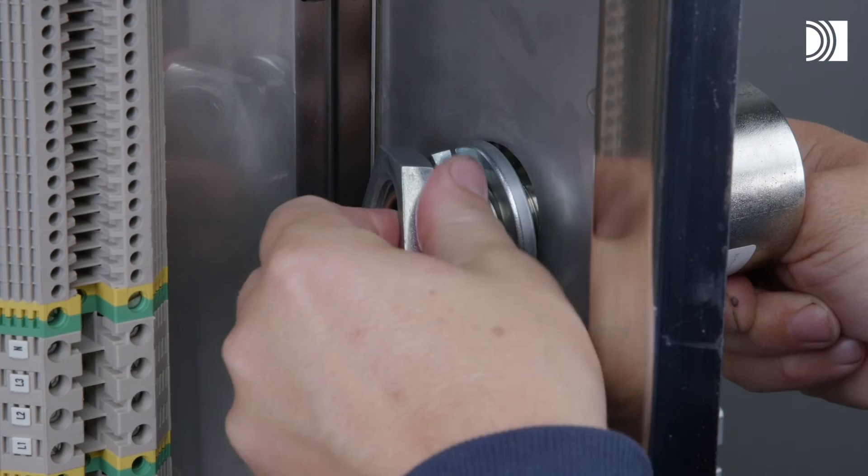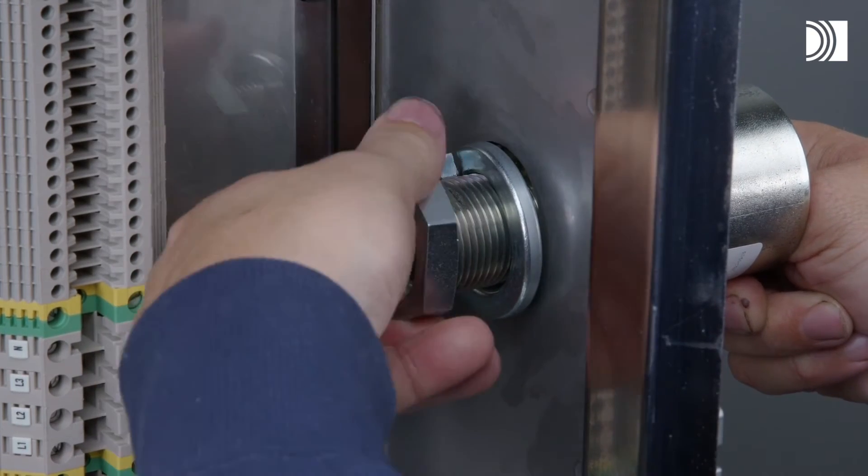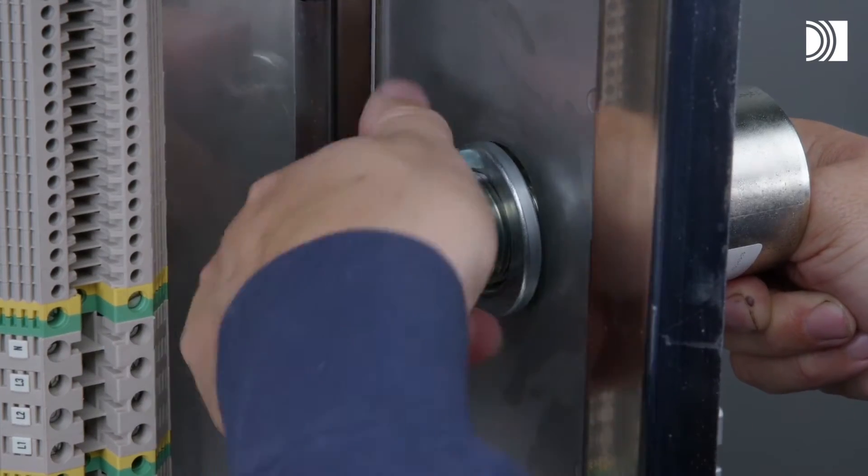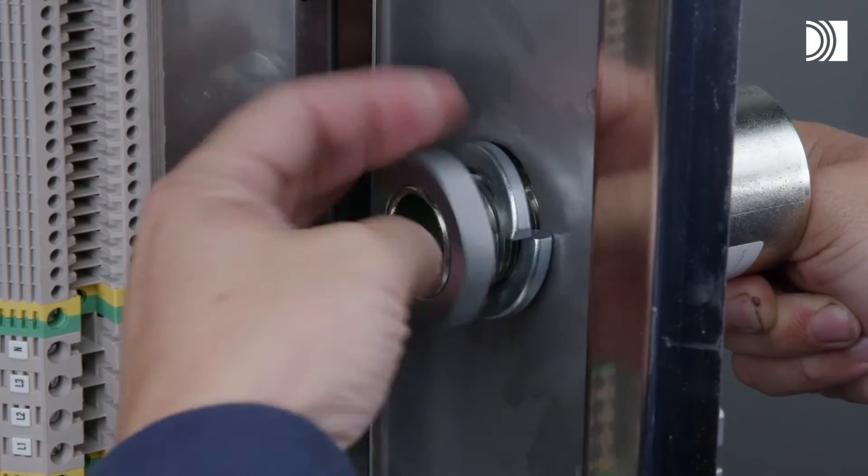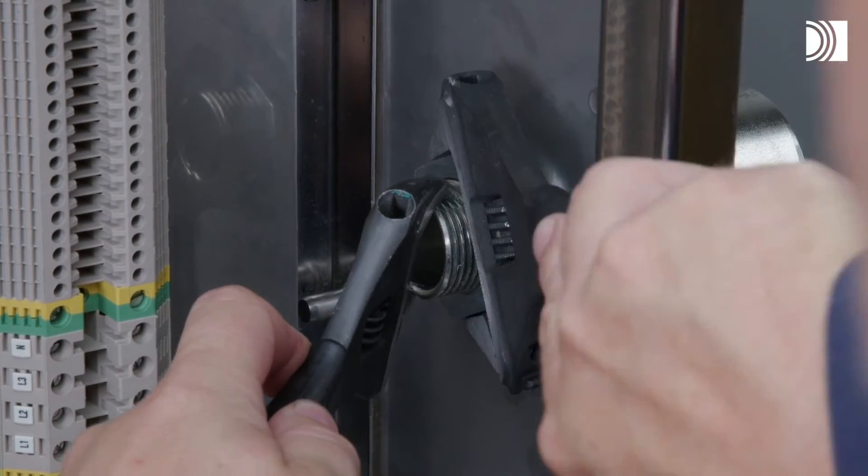Attach the lock washer. Thread on the nut. Tighten the nut firmly until the O-ring is compressed and the sleeve is flush with the structure. Prevent the sleeve from rotating by using another spanner.